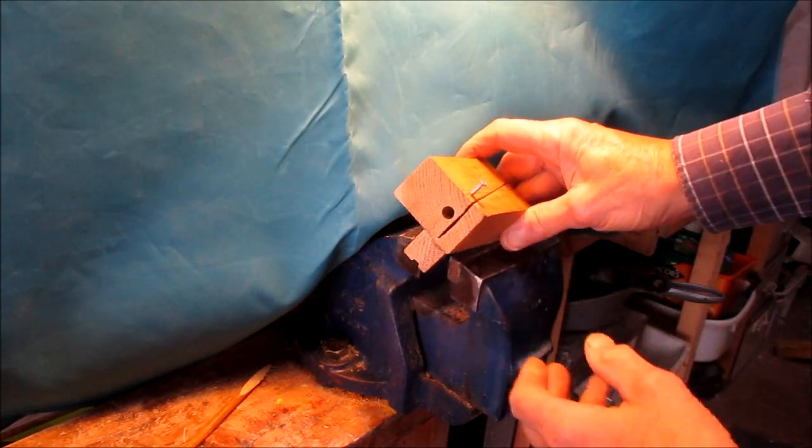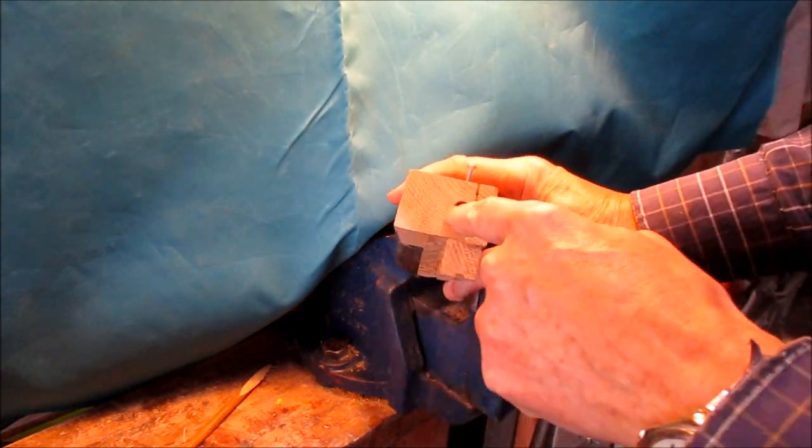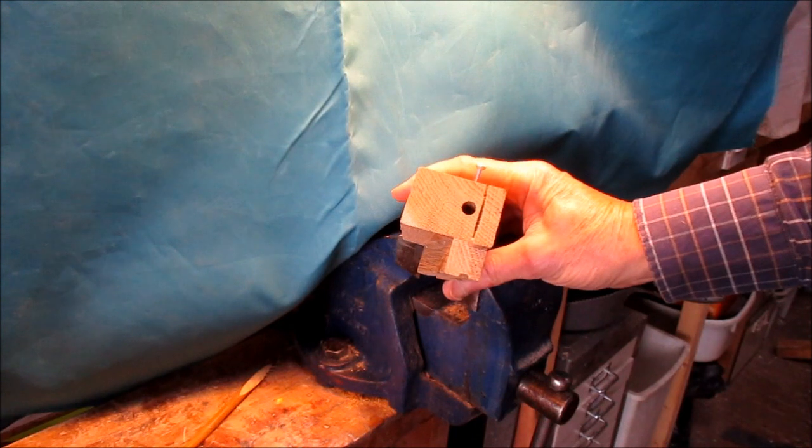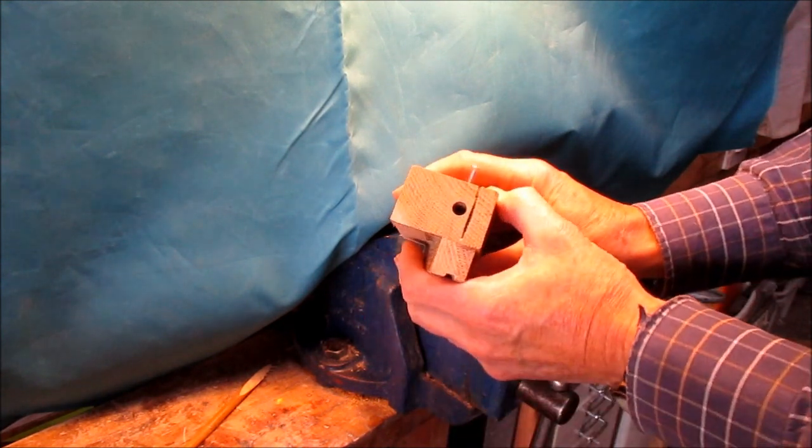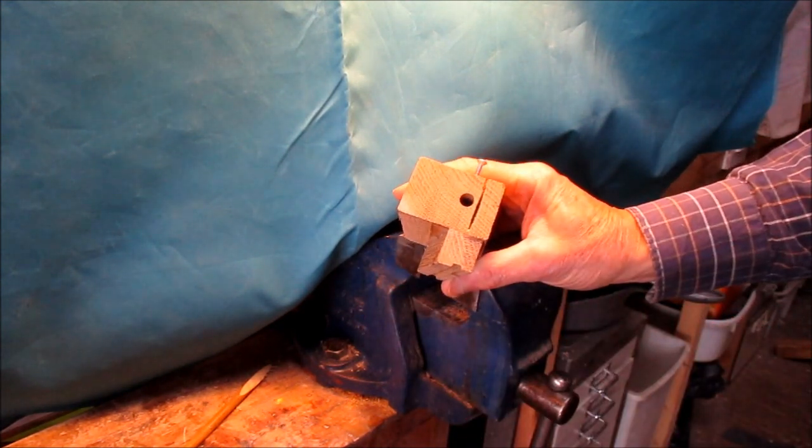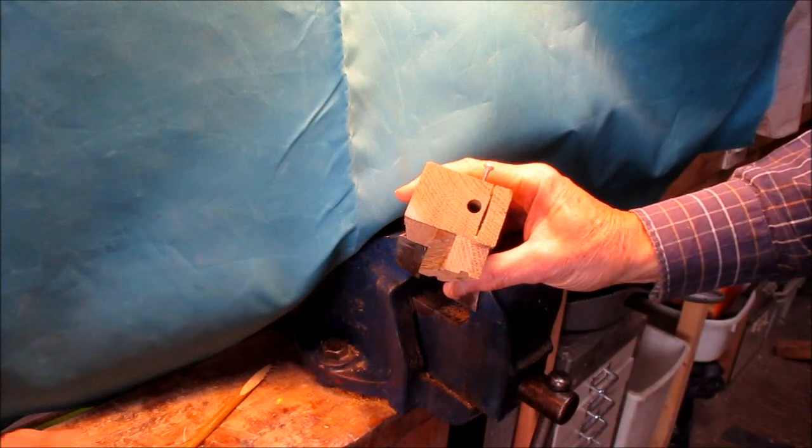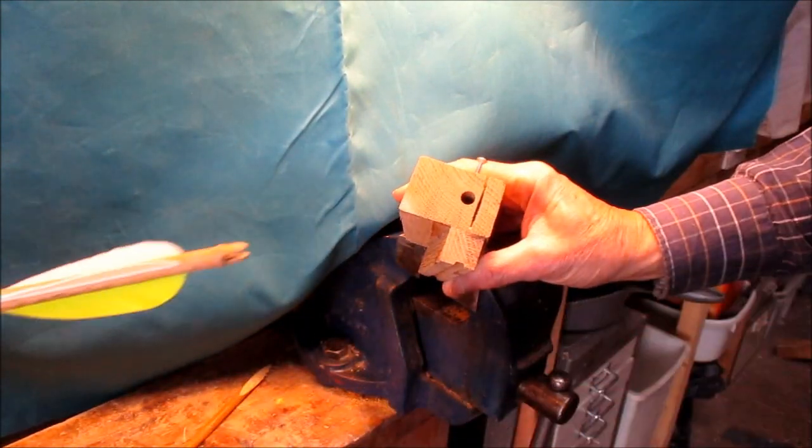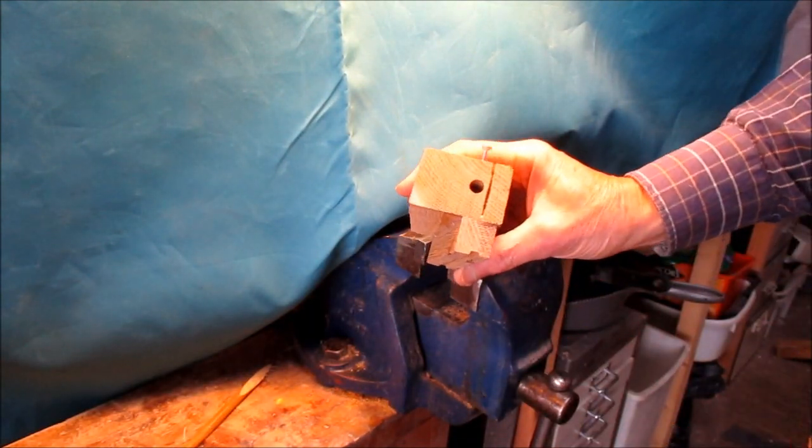This is the block, oak block, hole down the middle, initially drilled about 8mm but then honed out to the correct size by wrapping a bit of sandpaper around a shaft and pushing it in and out.